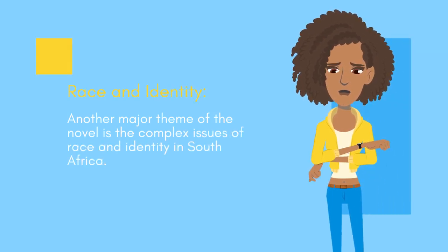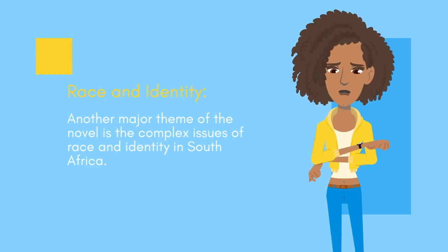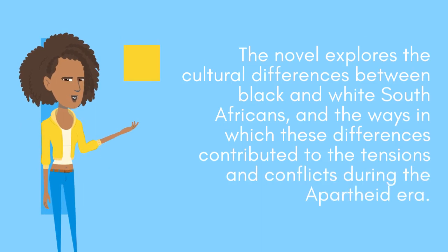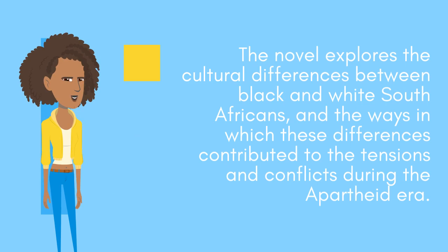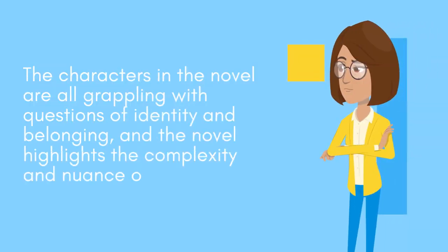Another major theme of the novel is the complex issues of race and identity in South Africa. The novel explores the cultural differences between black and white South Africans, and the ways in which these differences contributed to the tensions and conflicts during the apartheid era. The characters in the novel are all grappling with questions of identity and belonging, and the novel highlights the complexity and nuance of these issues.